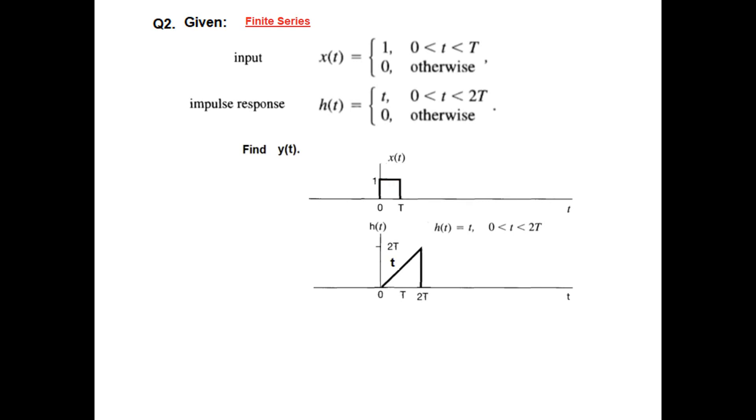And Ht has a value of t, which is a slope actually. This value slope and range is from 0 to 2 capital T. So from 0 to 2 capital T, this is the line for Ht.